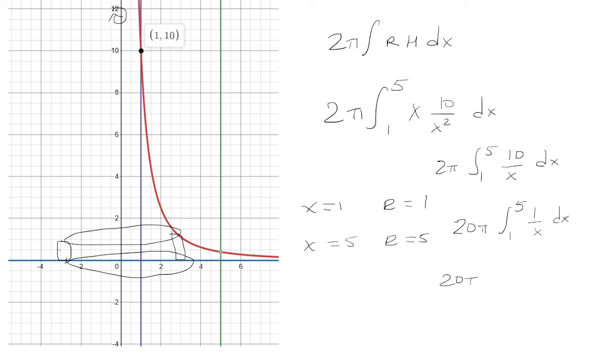And so this is just ln of x from 1 to 5, which is 20π ln of 5. Notice ln of 1 is 0, so I'm not even going to bother. So this is our volume.